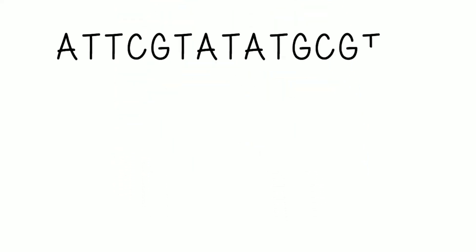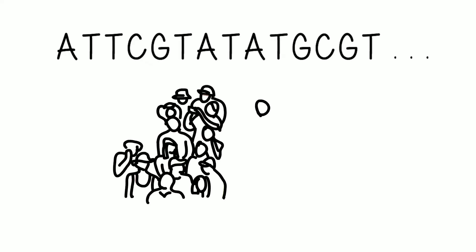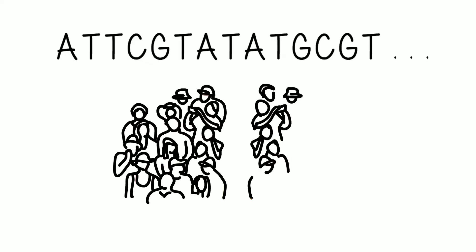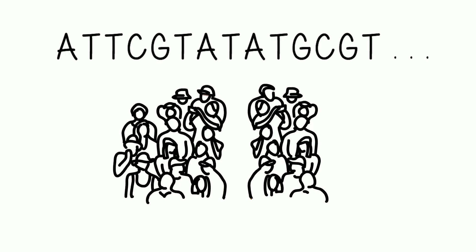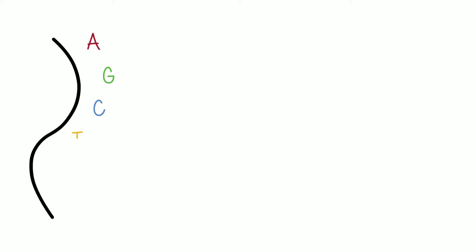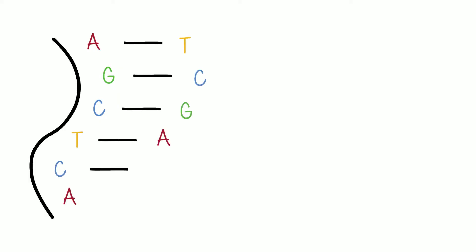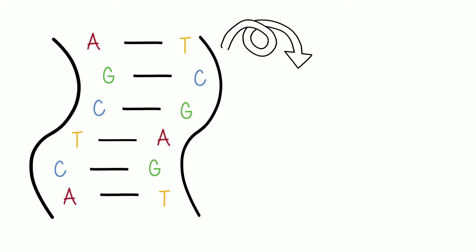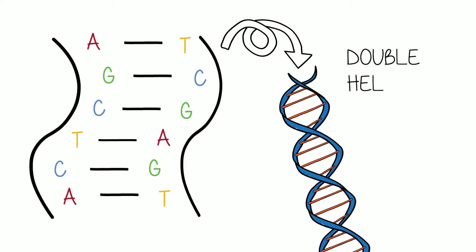It is a sequence of these four bases that encodes our biological information, and when translated by RNA, leads to the expression of hereditary characteristics. Because of complementary base pairing, one strand can act as a template for another. The two strands join to create the double helix, which is both strong and compact.